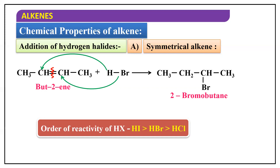The order of reactivity among hydrogen halides is: HI > HBr > HCl. As homework, find out why this order exists.